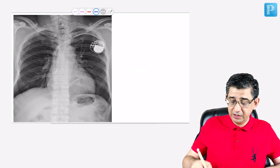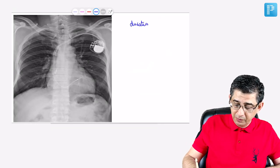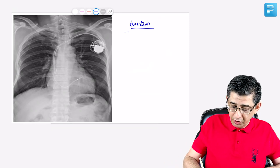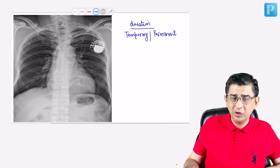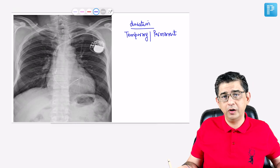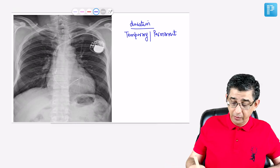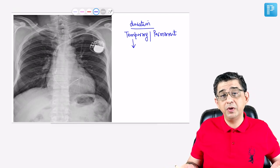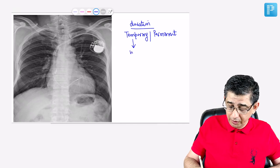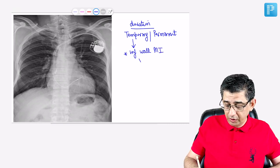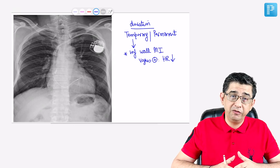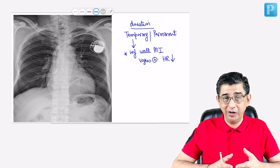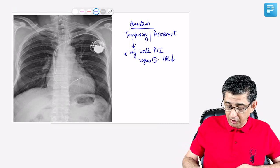We now focus on permanent versus temporary pacemakers. The word 'permanent' is a misnomer — battery replacement is needed subsequently. Temporary pacemakers are required in very sick patients. An important MCQ scenario: temporary pacemaker deployment in inferior MI. In inferior MI, vagal activation can dramatically reduce heart rate. You first give atropine, but if the heart rate is still in the 20s or 30s, you proceed to a transvenous pacemaker.